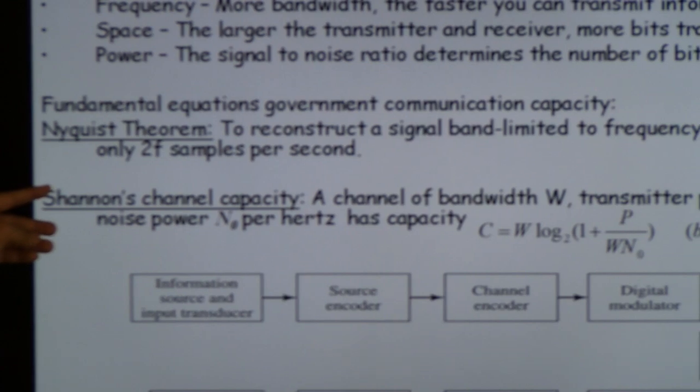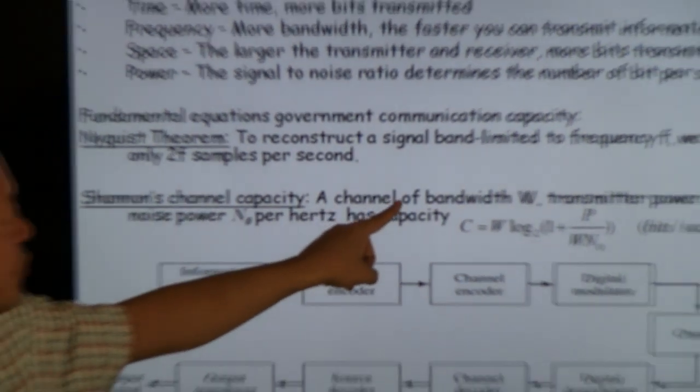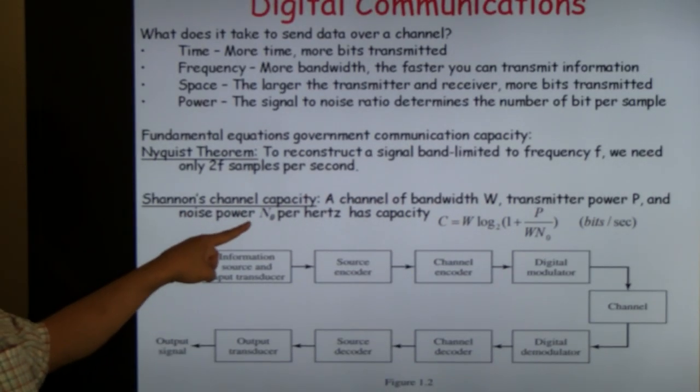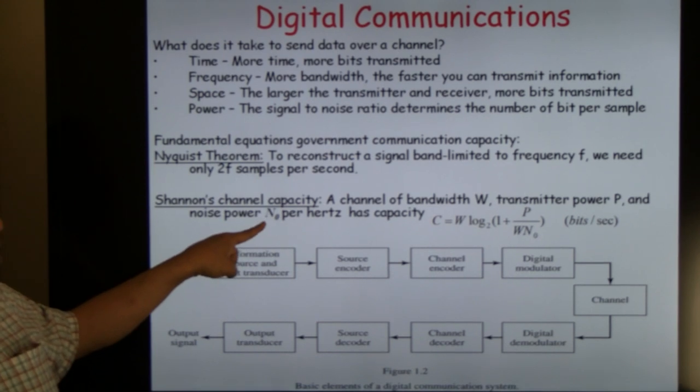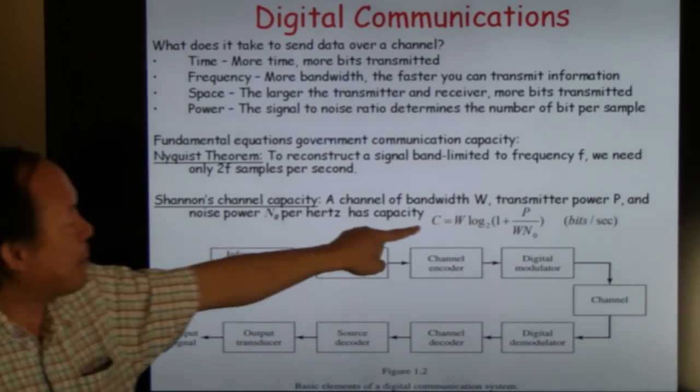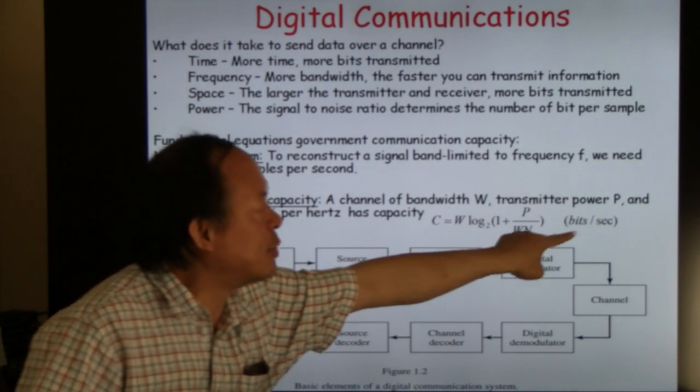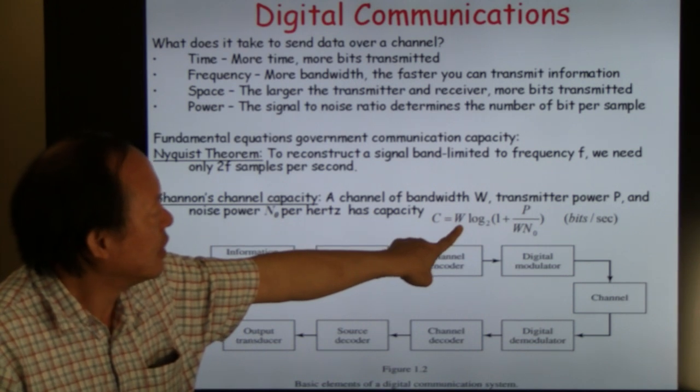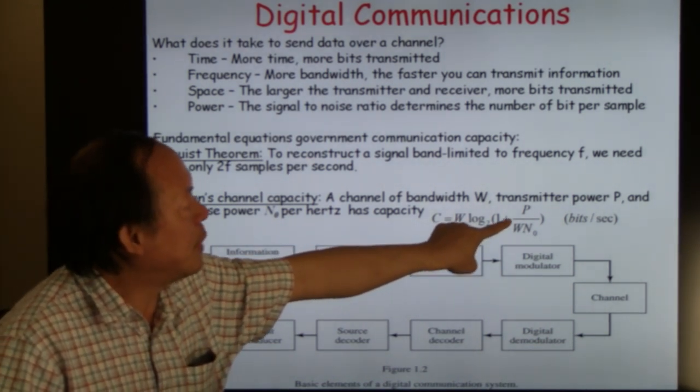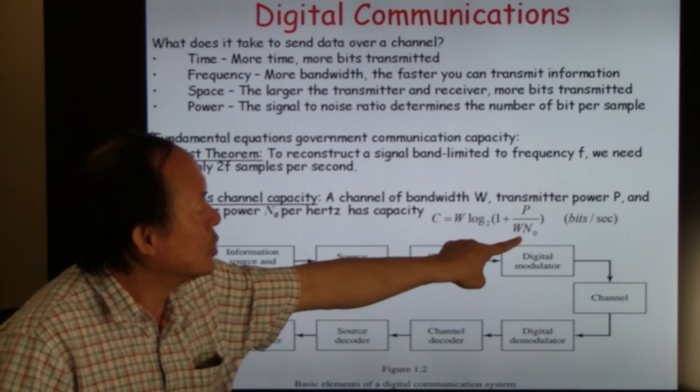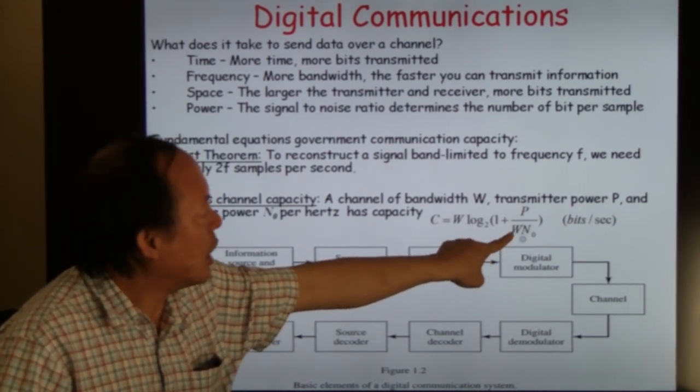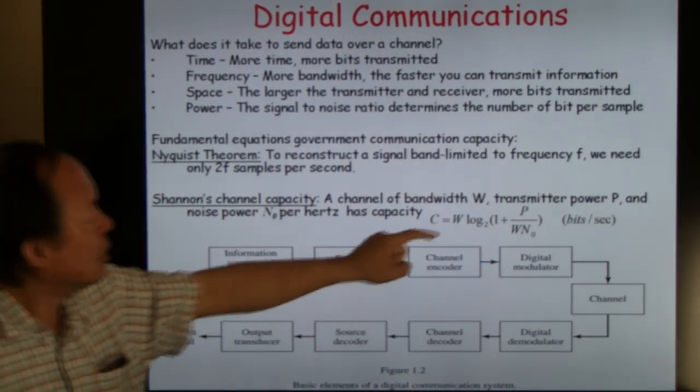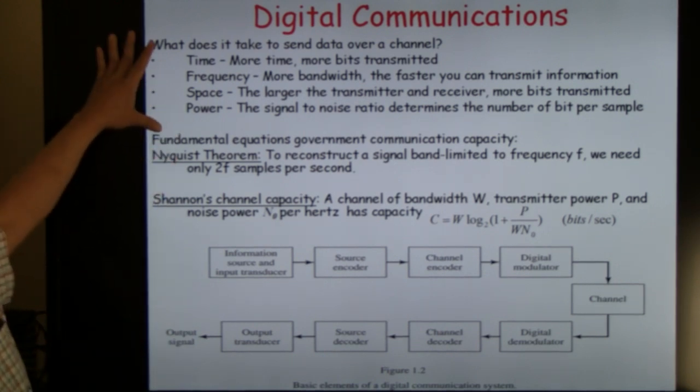Second is Shannon's channel capacity theorem, which states that for a channel of bandwidth W, transmitter power P, and noise power density of N per Hertz, the capacity—namely the number of bits per second you can send—is governed by this formula, which is proportional to the bandwidth and the logarithm base two of one plus the power to noise ratio, with the bandwidth also appearing in the denominator.